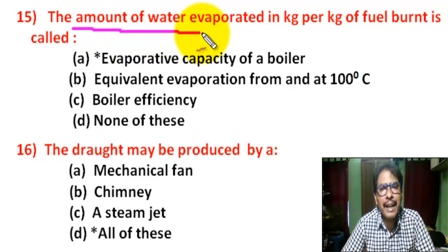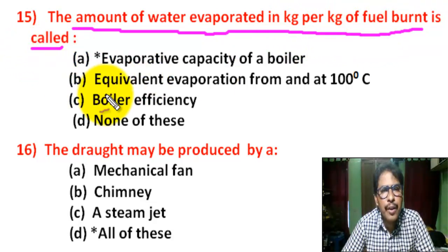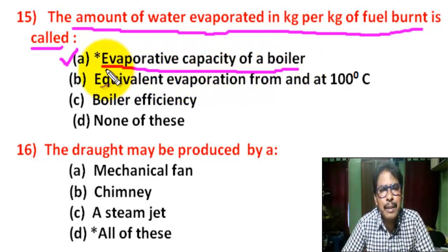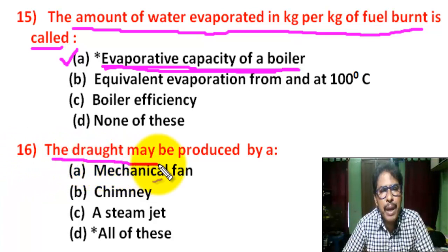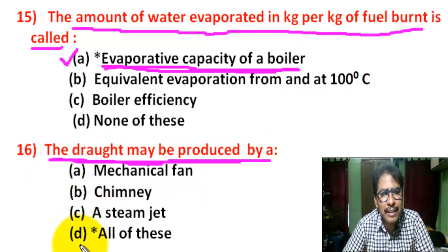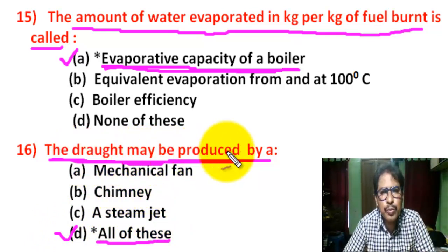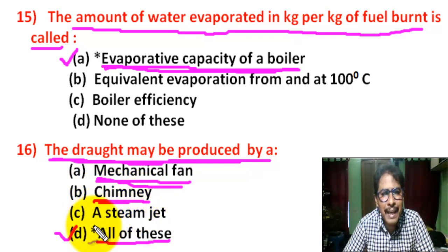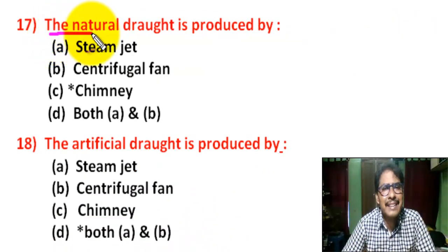The performance of a boiler is measured by: the amount of water evaporated per hour, steam produced in kg per hour, and steam produced in kg per kg of fuel burned — so correct answer is D: all of the above. Question number 15: The amount of water evaporated in kg per kg of fuel burned is called — there are four options. Correct answer is A: evaporative capacity of the boiler.